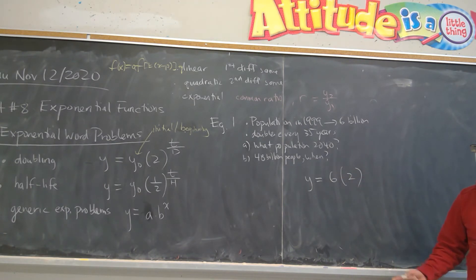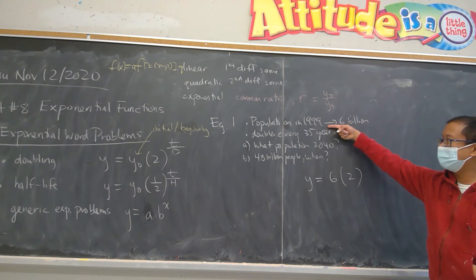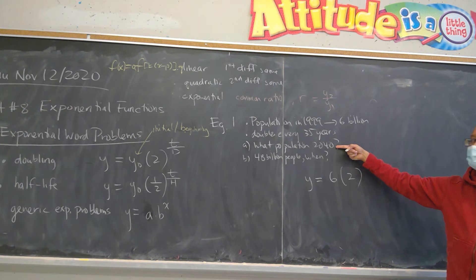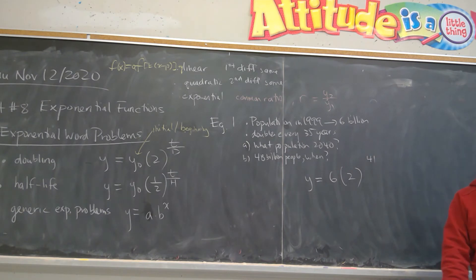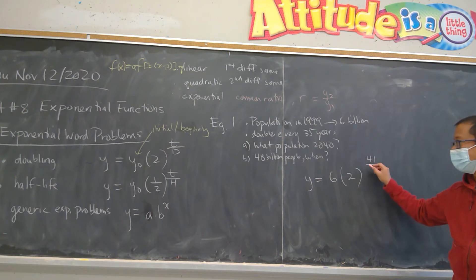The time, well we have to figure out from 1999 to 2040. Anyone in the class want to tell me what is that time frame? No pressure. Tanish? 41 years. So that's going to be 41 in the numerator. And that is the T. And the D, however you can tell, is the doubling period. In this case, that's our 35.